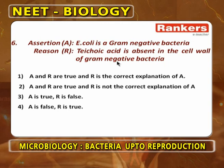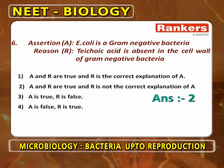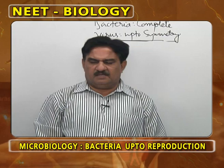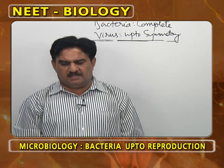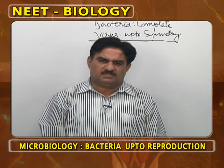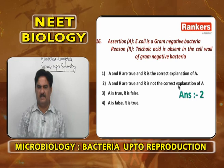Assertion-reasoning: E. coli is a gram-negative bacterium — correct. Techoic acid is absent in the cell wall of gram-negative bacteria — correct. However, the gram-negative nature of E. coli is not decided solely because techoic acid is absent; there are many other features. So both A and R are true, but R is not the correct explanation of A — second option.